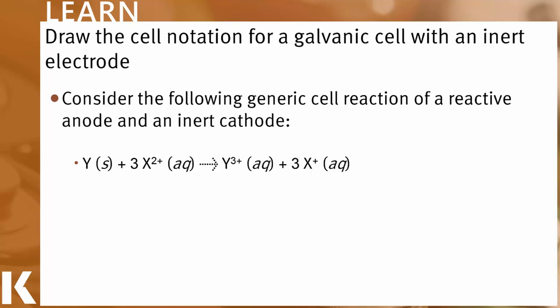Here is a generic reaction where we have a reactive anode and inert cathode. Let's analyze this. Looking at the left side of this reaction, we have the solid Y, some species, and since it's a solid, of course, its oxidation number is zero. And Y is changing and it's going to Y3+. How do you go from zero to three plus? You're increasing the oxidation number. And since we're only working with electrons and electrons are negative, that must mean that we are losing electrons because minus a minus is a plus or an increase in the oxidation number. So, Y is being oxidized and I'm tracing that by this red arrow here.